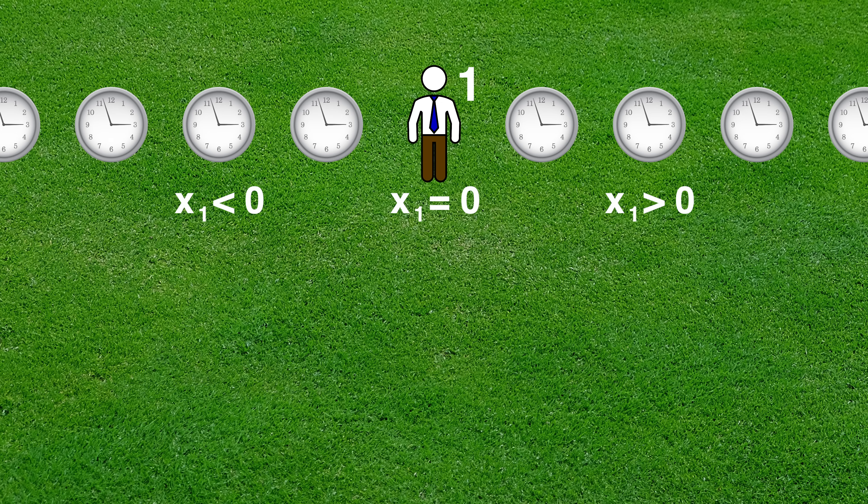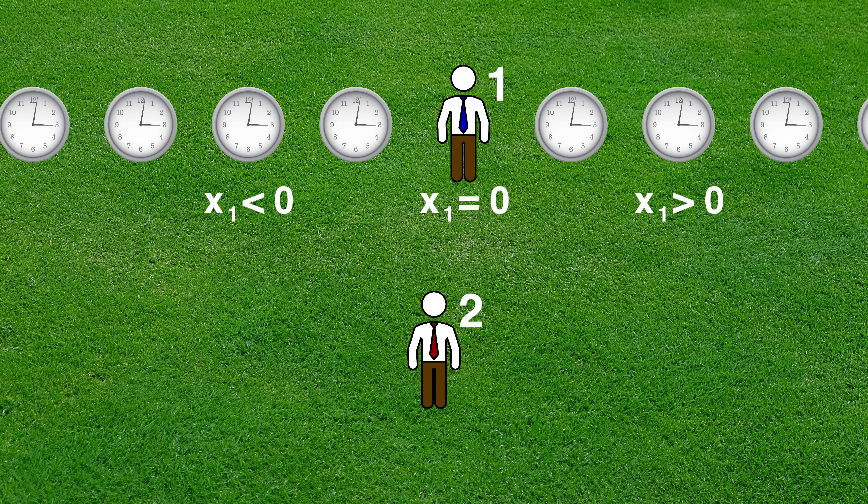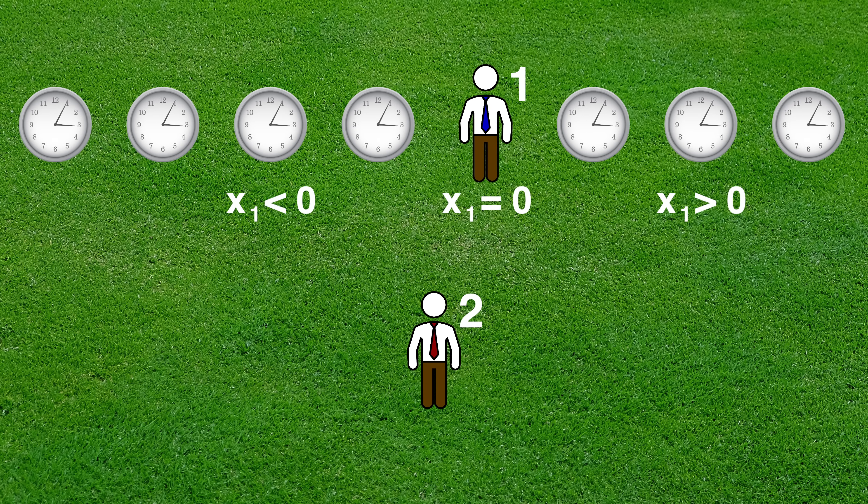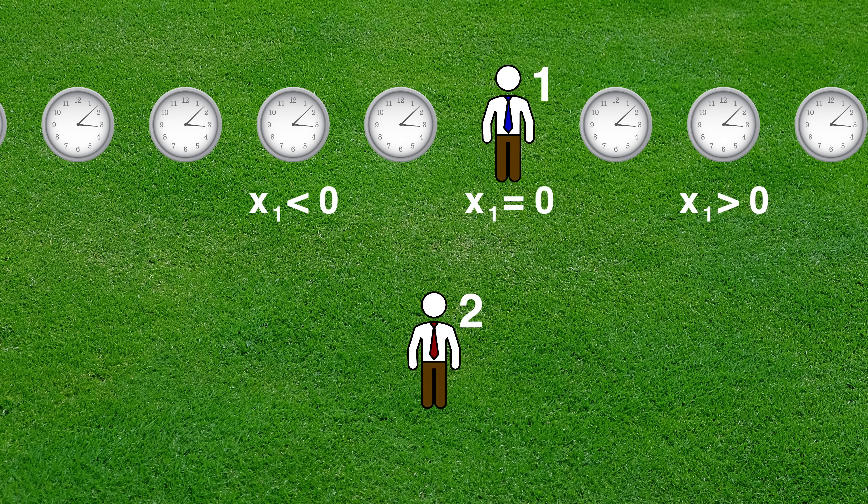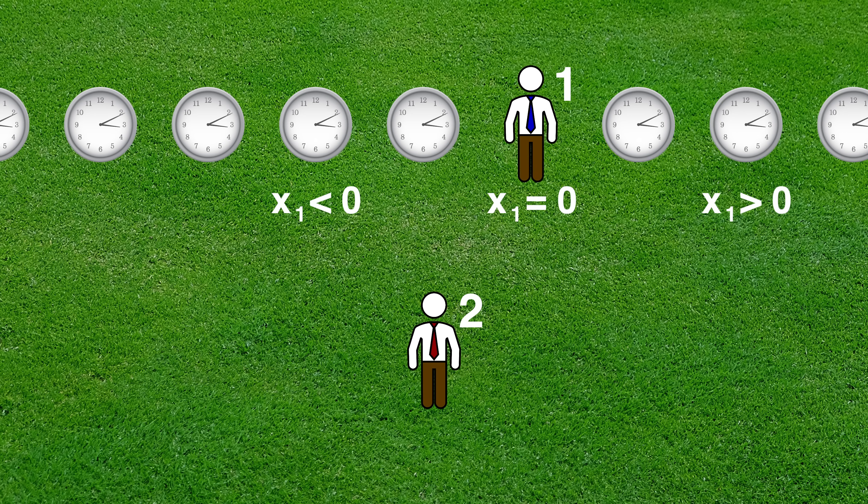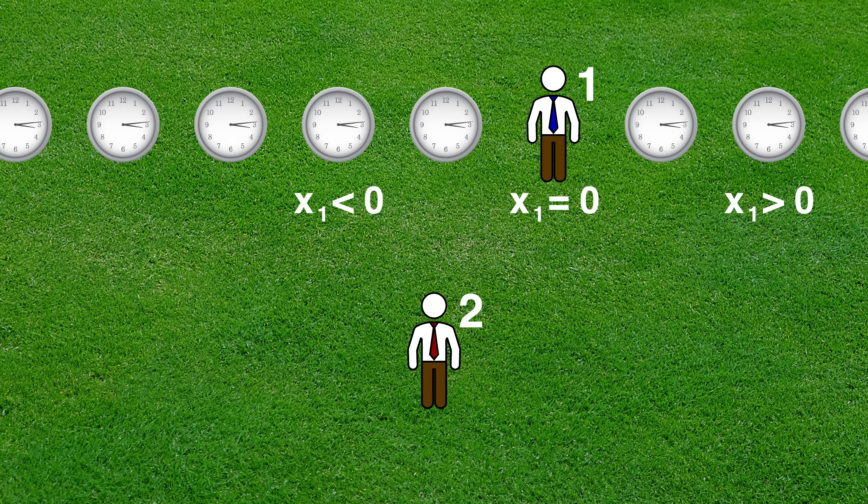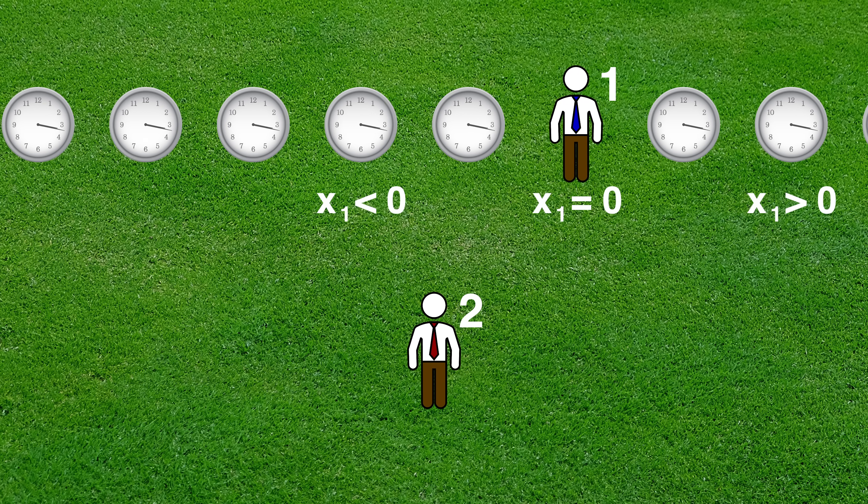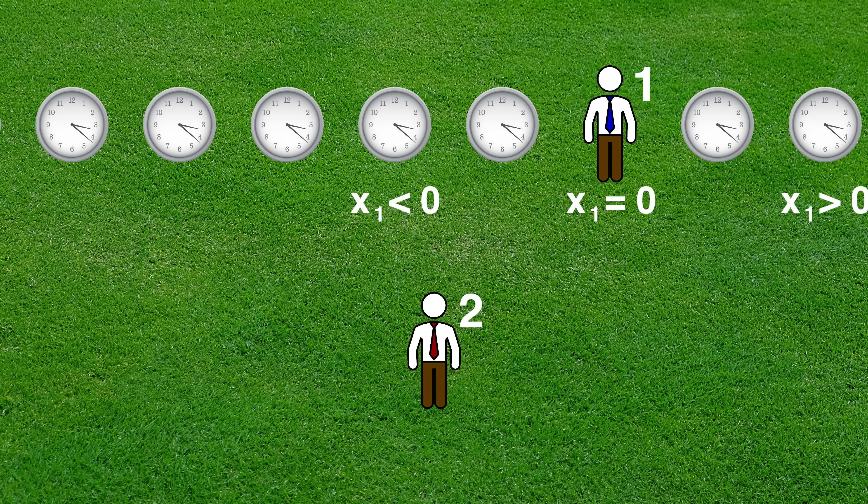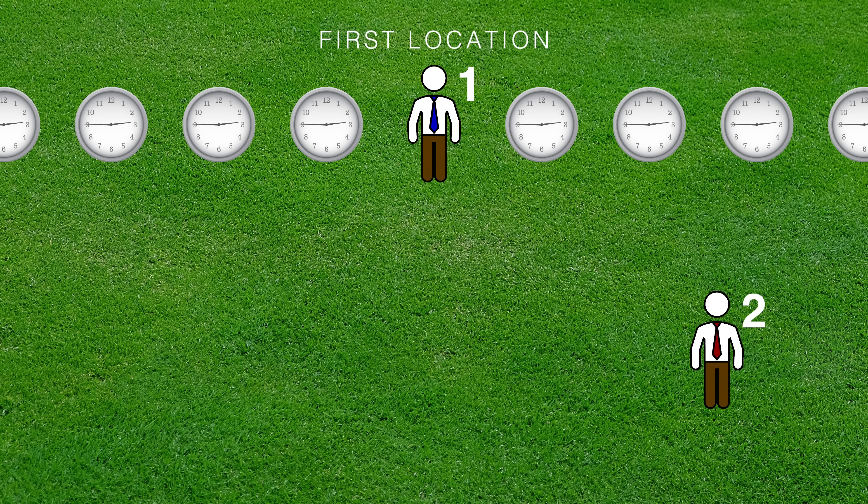Now let's add in Observer 2. He sees Observer 1 moving to the right at velocity v and he wants to know what he thinks the moving clocks will read. To do that, we will use the Lorentz transforms. But to do that, we need to figure out the locations. Let's pick two locations, say the location of Observer 1 and Observer 2, as seen by Observer 1.